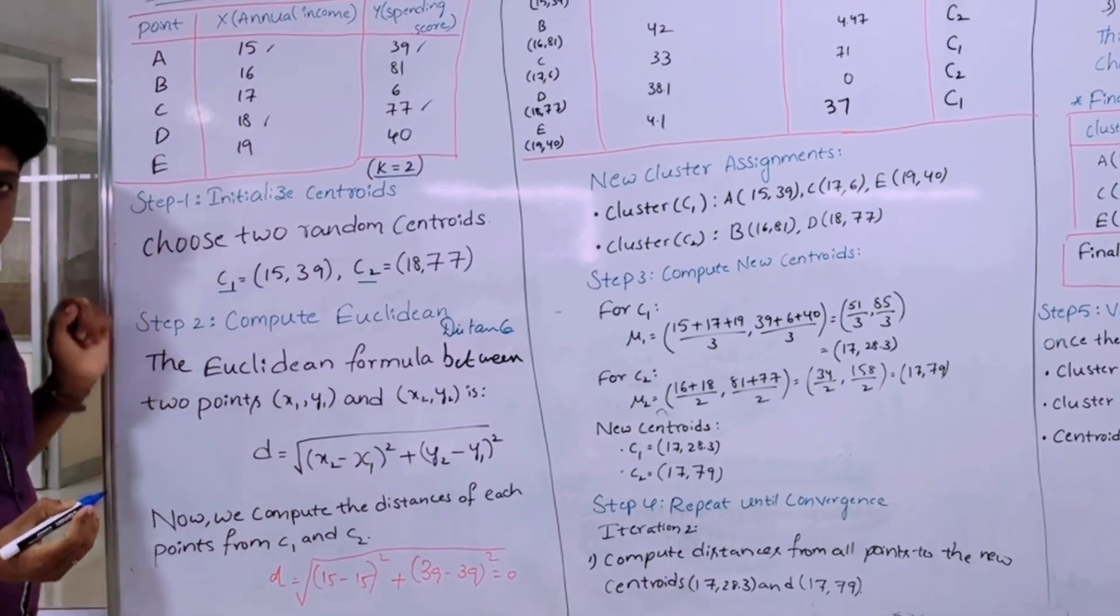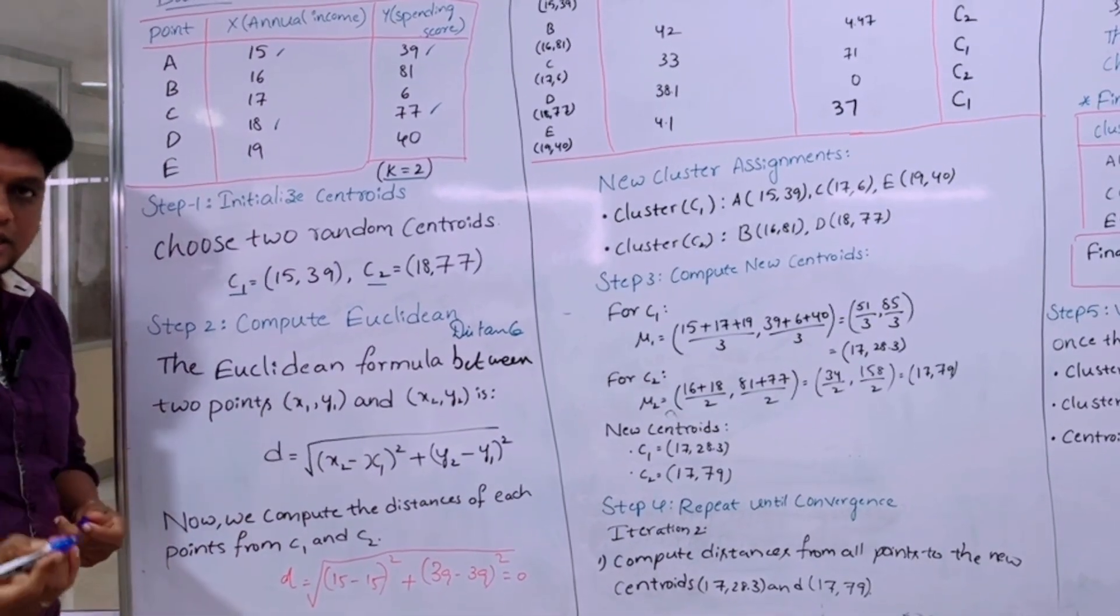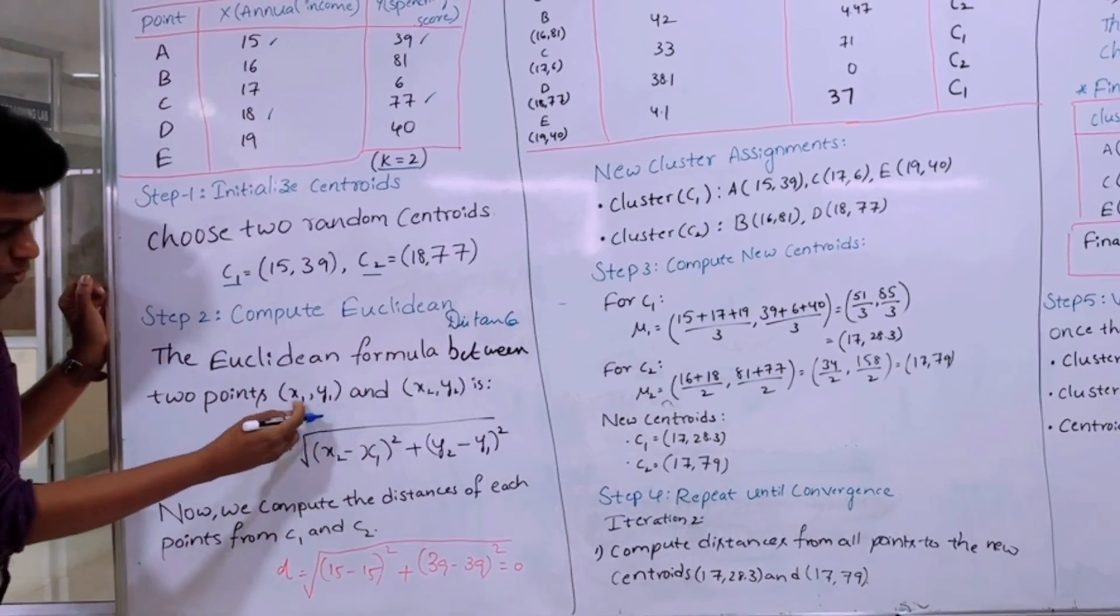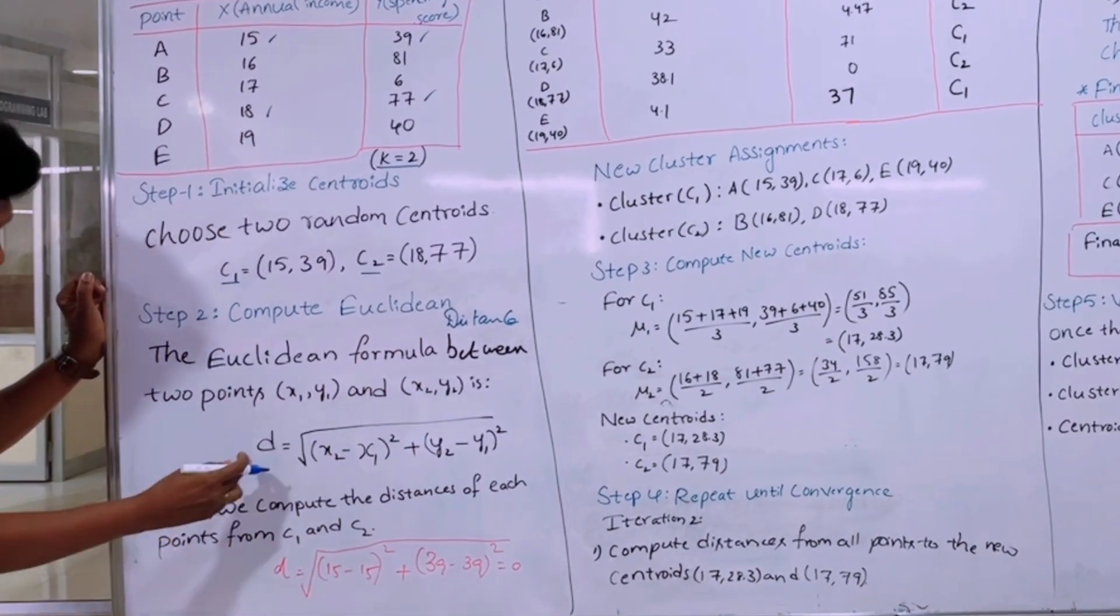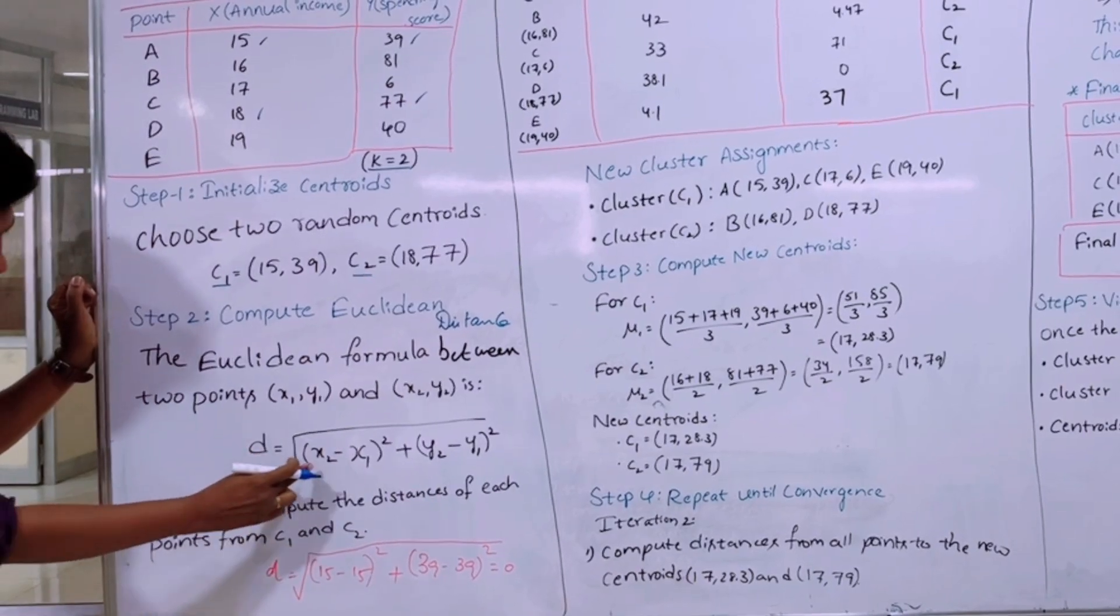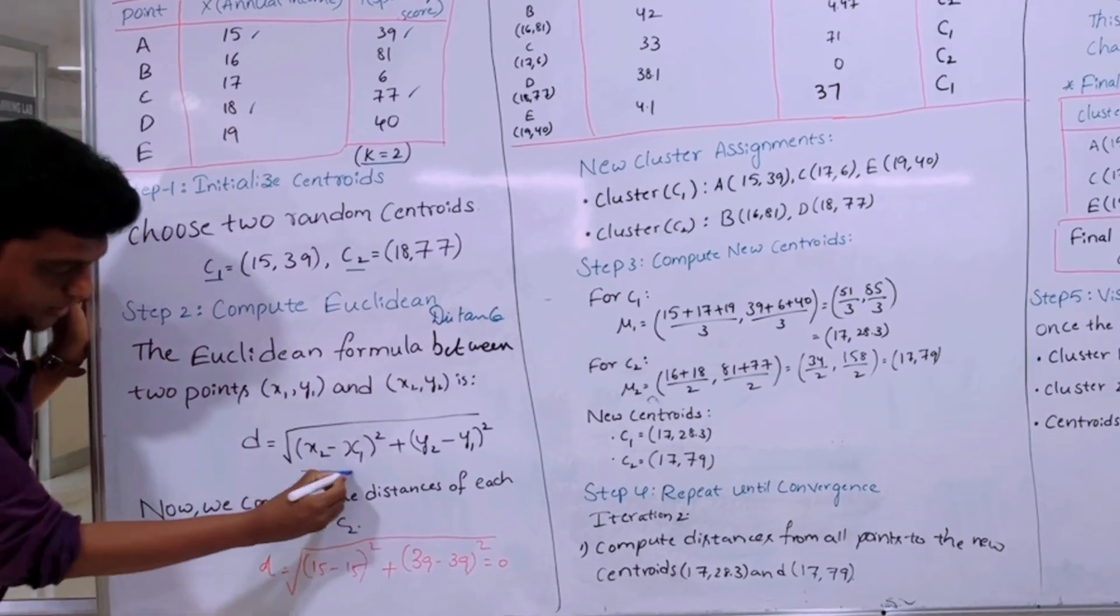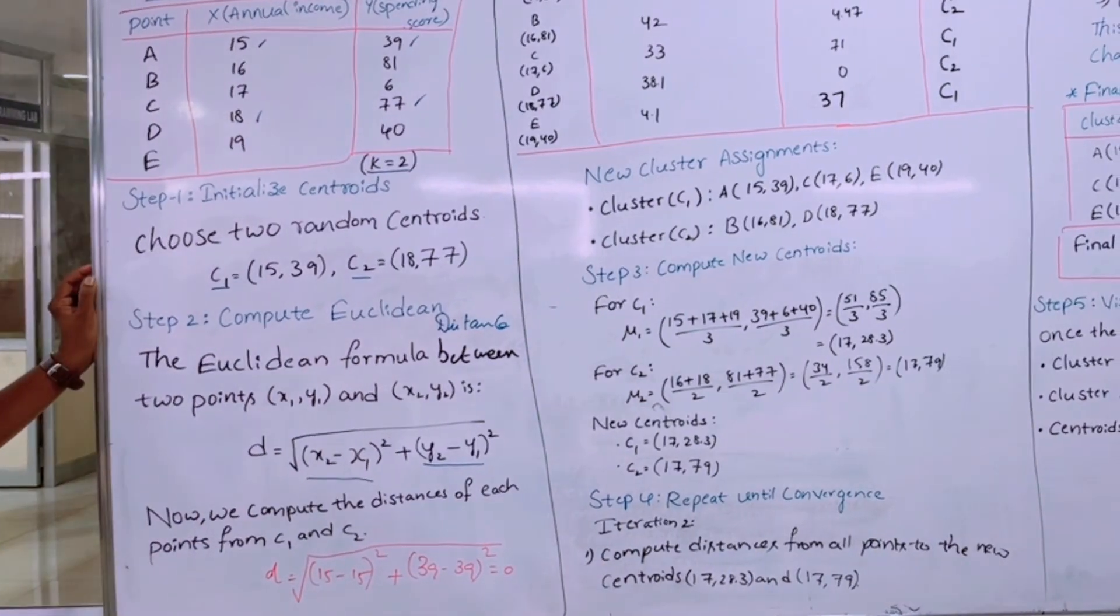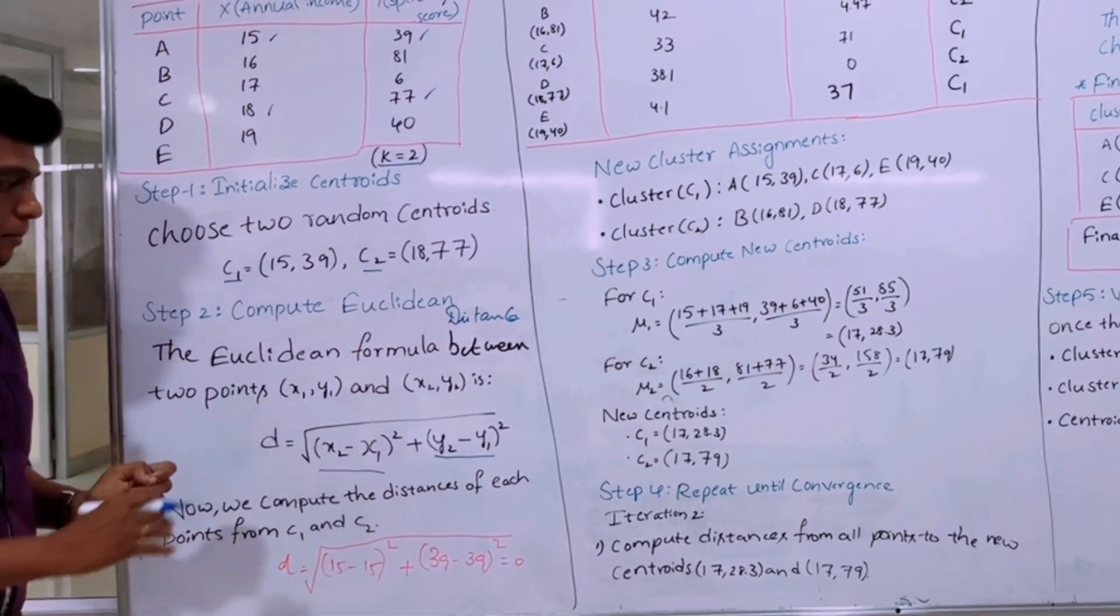Then in the second step I am going to compute the Euclidean distance. So the distance between two points formula is given by x1,y1 and x2,y2, or the two points is given by d equals square root of (x2 minus x1) whole square plus (y2 minus y1) whole square. So this is how the distance can be calculated.